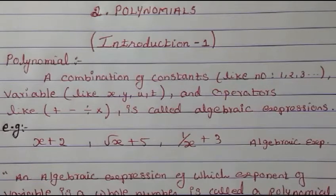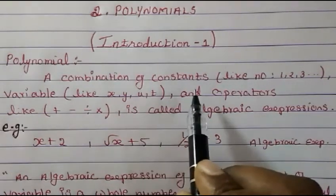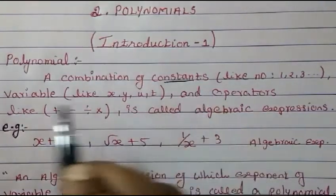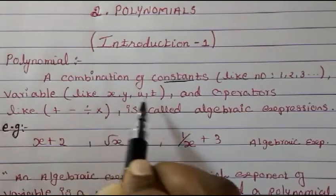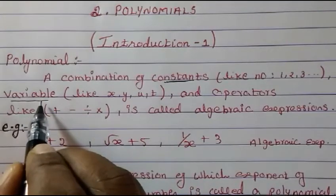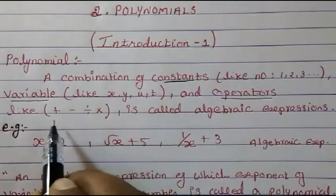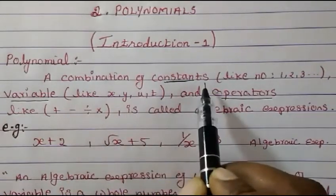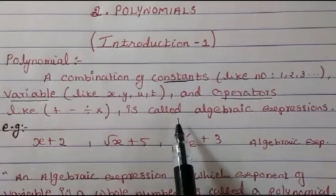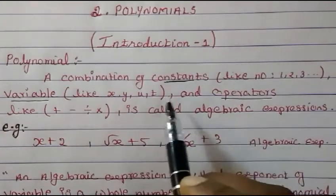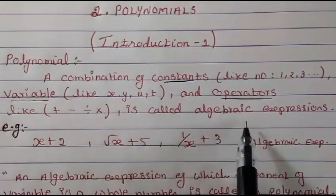You have already studied this in 9th class, but still let's review. What is a polynomial? A combination of constants — meaning numbers — and variables — meaning all English alphabets A to Z — and operators, meaning plus, minus, division, multiplication. A combination of constants, variables, and operators is called an algebraic expression, as you have studied in 9th standard.